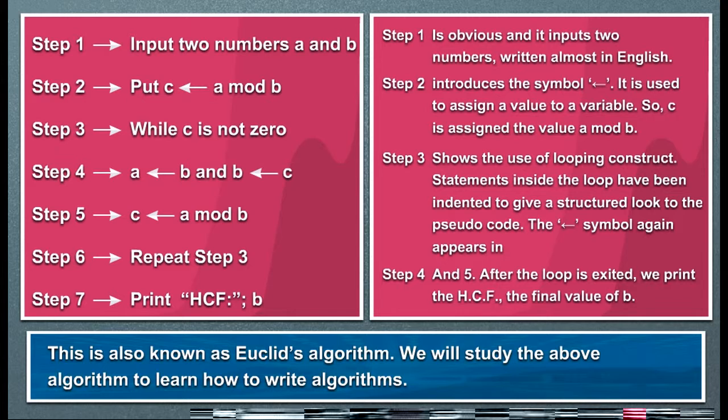The left arrow symbol again appears in steps four and five. After the loop is exited, we print the HCF, the final value of b.